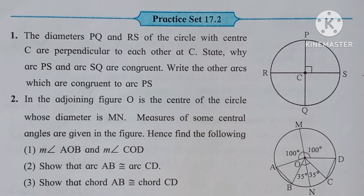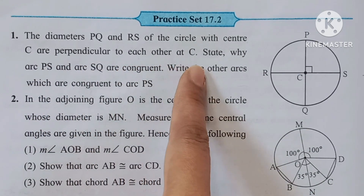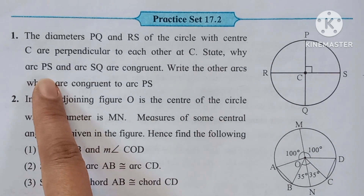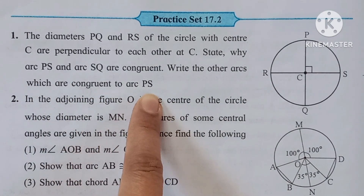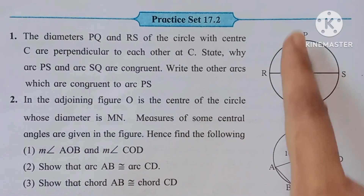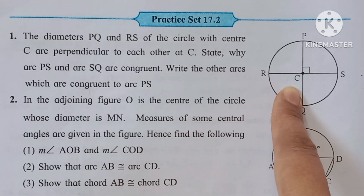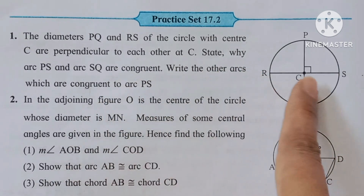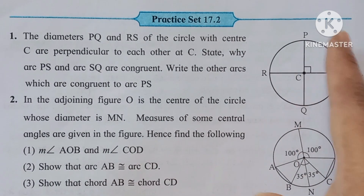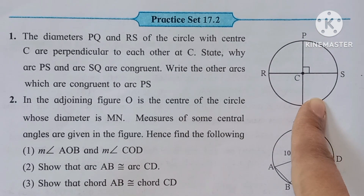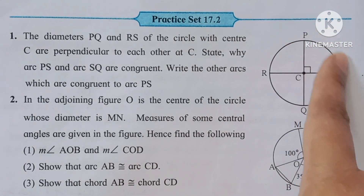See the first question. The diameter PQ and RS of the circle with center C are perpendicular to each other at C. State why arc PC and arc SR are congruent, and write the other arcs which are congruent to the arc PS.